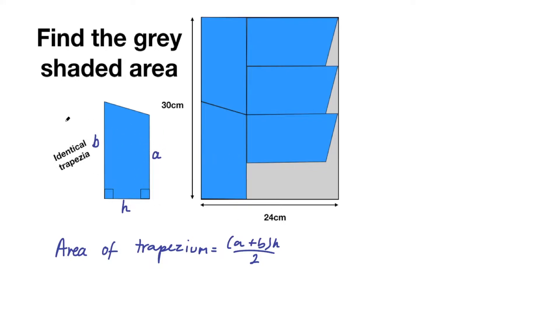I've labeled the sides now so let's see if we can work out these unknowns a, b and h. Well the first thing we can say is this length 24 centimeters is h plus b, that's the bottom. So we can say h plus b equals 24.